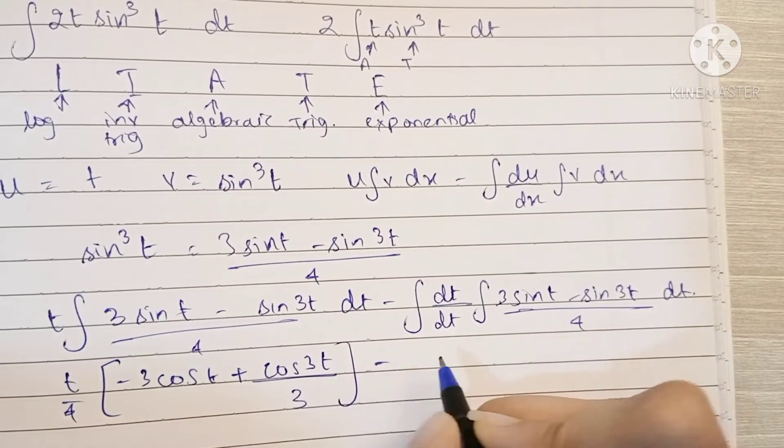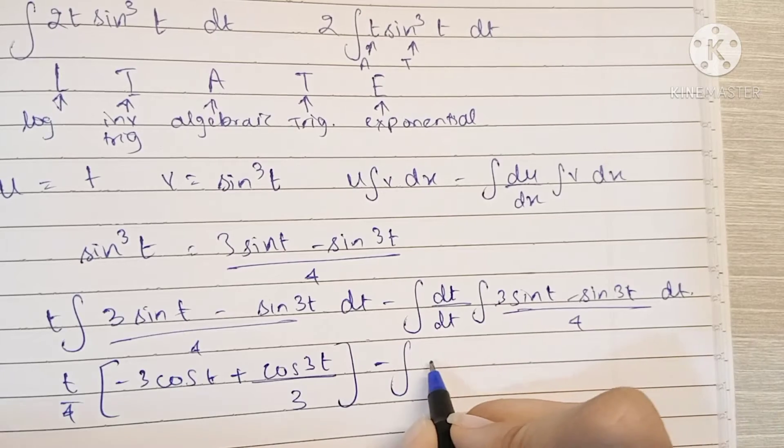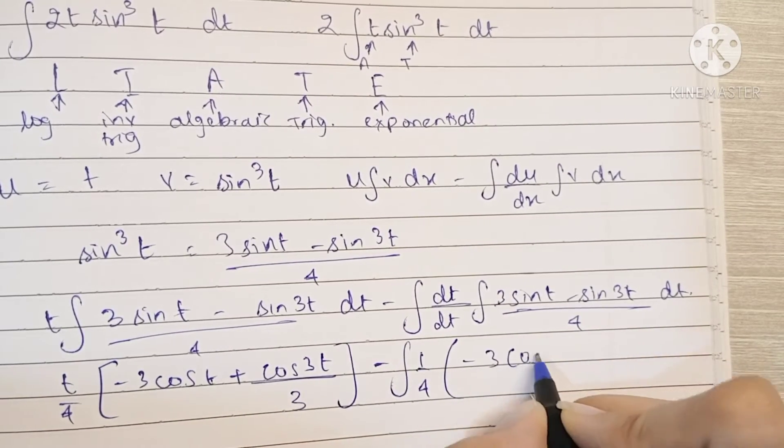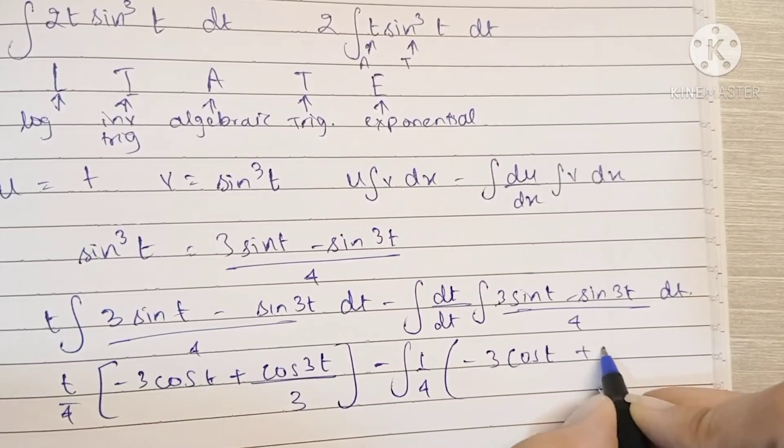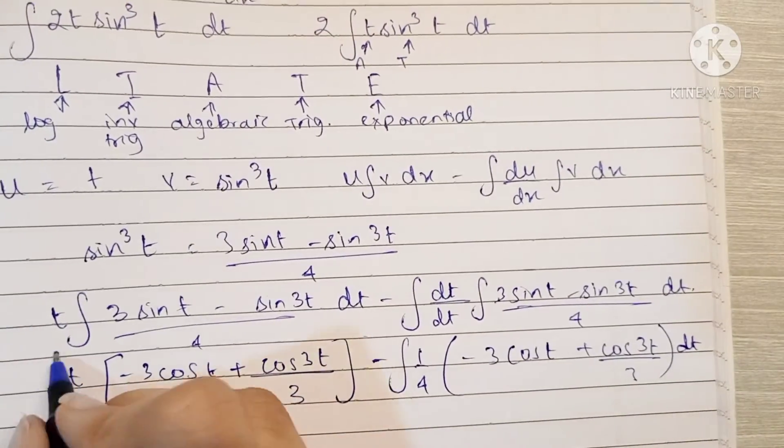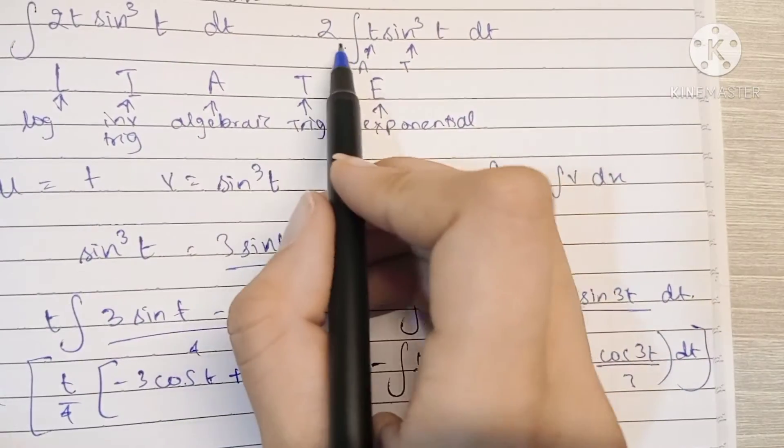Minus the integration of differentiation of t with respect to itself is 1, so this just becomes 1 by 4 into the same thing: minus 3 cos t plus cos 3t by 3. I'm going to take 1 by 4 outside, and just remember that the whole thing is supposed to be multiplied by 2 because we took 2 outside.